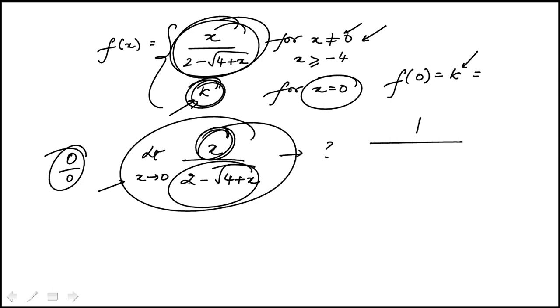And the denominator is 0 minus half. And this would go in the denominator. And then the derivative of 4 plus x is 1.